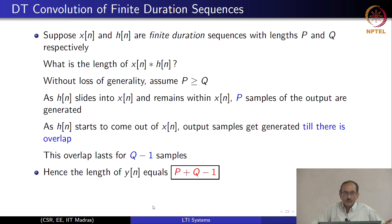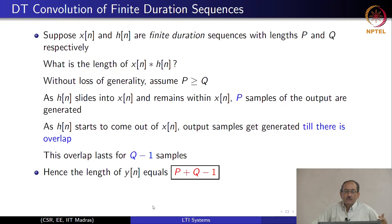You get p plus q minus 1 because when the overlap ceases, one shift means a shift by one sample. This is the difference between continuous time and discrete time. In continuous time, just when the overlap ceases, the difference is just one point, and one point does not contribute to the length. Therefore, if the duration of one pulse is T1 and the other is T2, the overall duration in continuous time is T1 plus T2. Whereas in discrete time it is p plus q minus 1, because when you cease to overlap the difference is one sample.